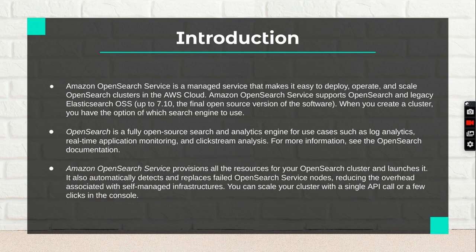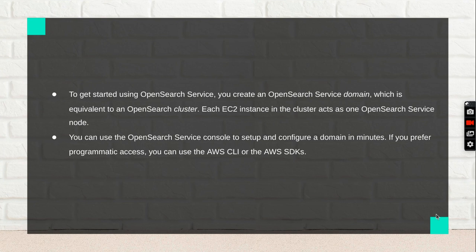Amazon OpenSearch service is a managed service that makes it easy to deploy, operate, and scale OpenSearch clusters in the AWS cloud. It provisions all resources for your cluster, automatically detects and replaces failed nodes, reducing overhead associated with self-managed infrastructure. You can scale your cluster with a single API call or a few clicks in the console, and set up and configure a domain in minutes.